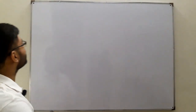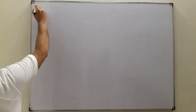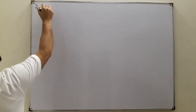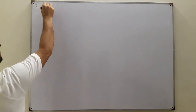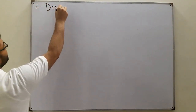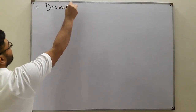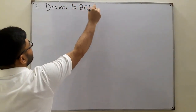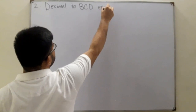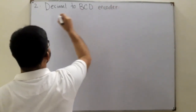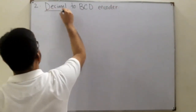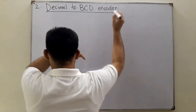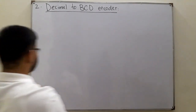Bismillahirrahmanirrahim. Assalamu alaikum. Today we see the next type of encoder - the second type - which is the decimal to BCD encoder. You know what a decimal is, and you know what BCD means: Binary Coded Decimal.